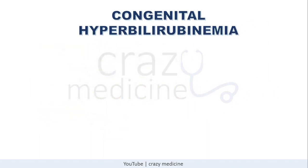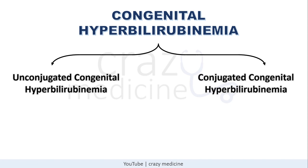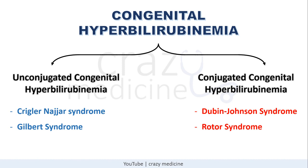Congenital hyperbilirubinemia can be of two types: unconjugated type and conjugated type. Syndromes in the unconjugated type include Crigler-Najjar syndrome and Gilbert syndrome, and in the conjugated type include Dubin-Johnson syndrome and Rotor syndrome. We will study each of these syndromes in detail.